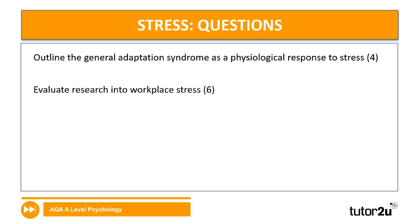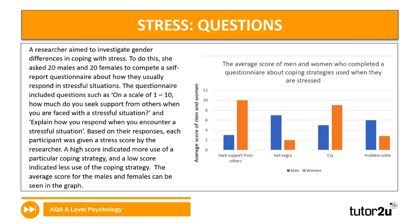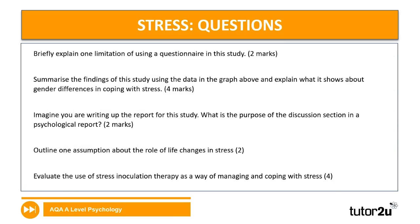Further stress questions with a stem: a researcher investigated gender differences in coping with stress, asking 20 males and 20 females to complete a self-report questionnaire about how they usually respond in stressful situations. Questions included items such as rating on a scale of one to ten how much they seek support from others, and explaining how they respond to stressful situations. Based on responses, each participant was given a stress score. The graph shows average scores for males and females across four coping strategies: seek support from others, get angry, cry, and problem solve — men in blue, women in orange.